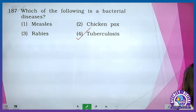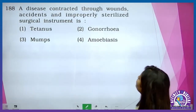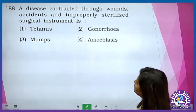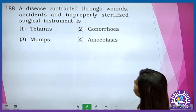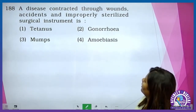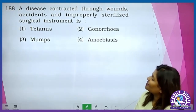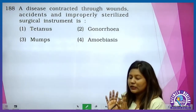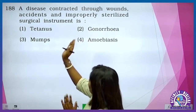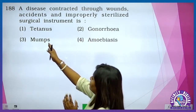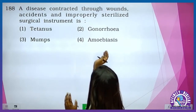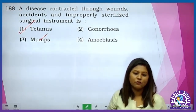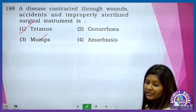A disease contracted through wounds, accidents, and improperly sterilized surgical instruments is tetanus. We call that as ATS — anti-tetanus serum.